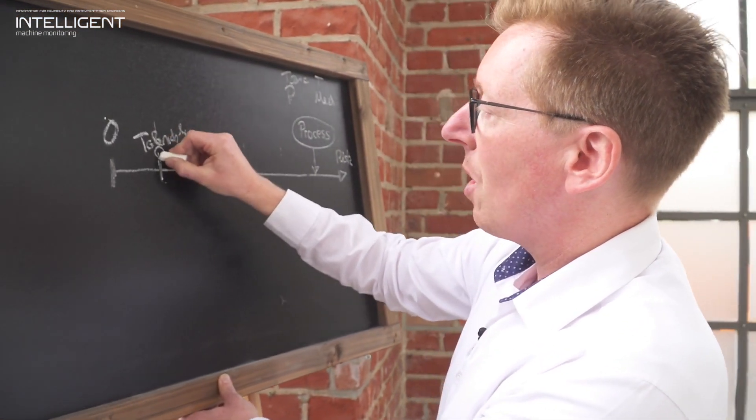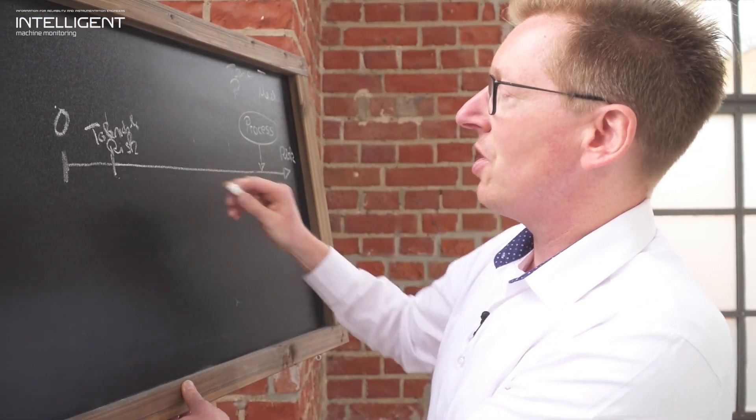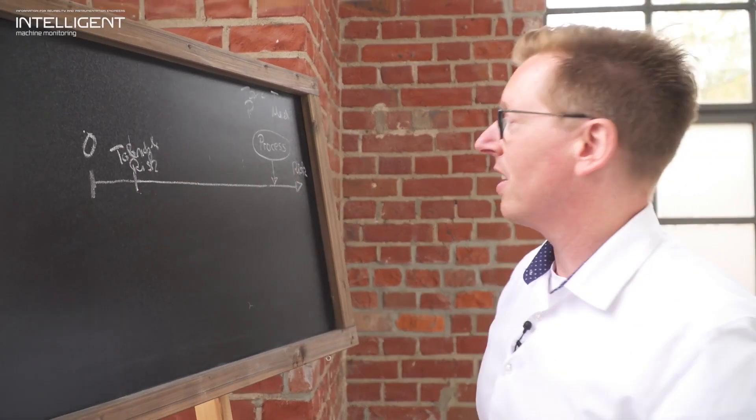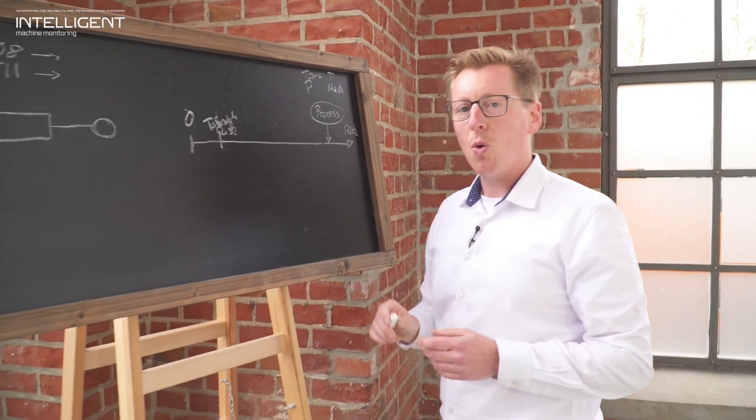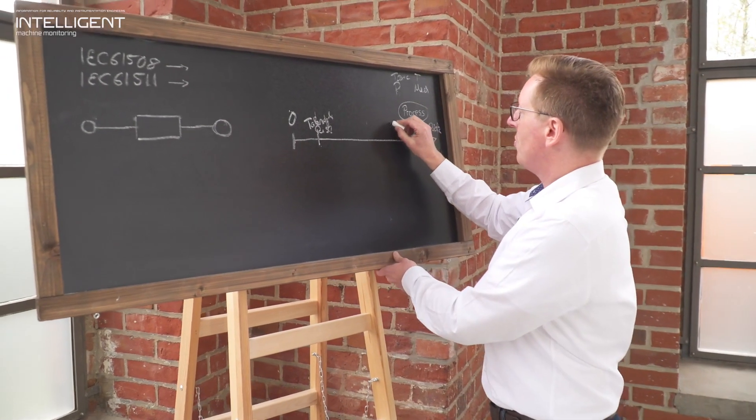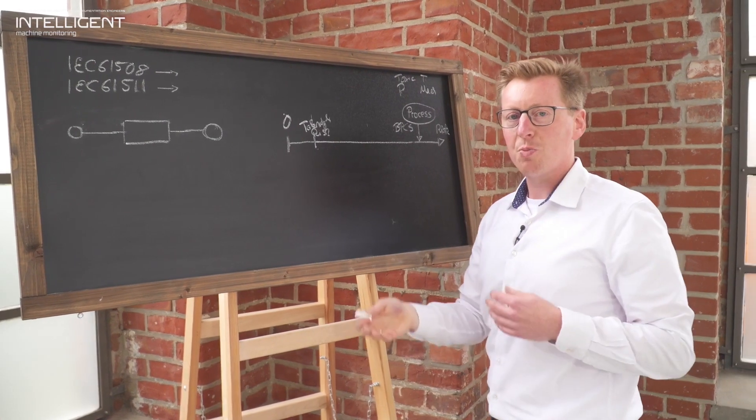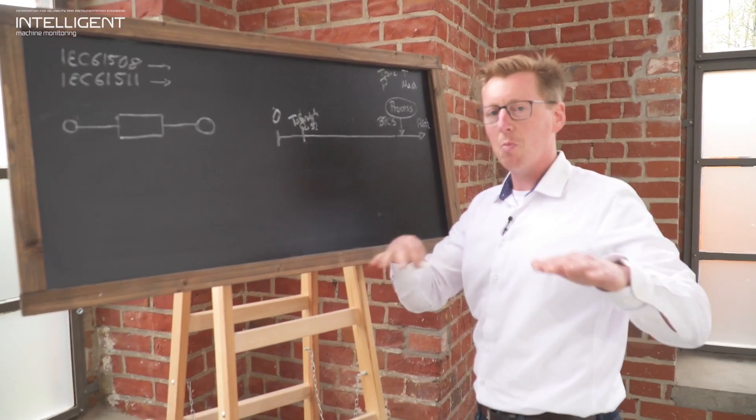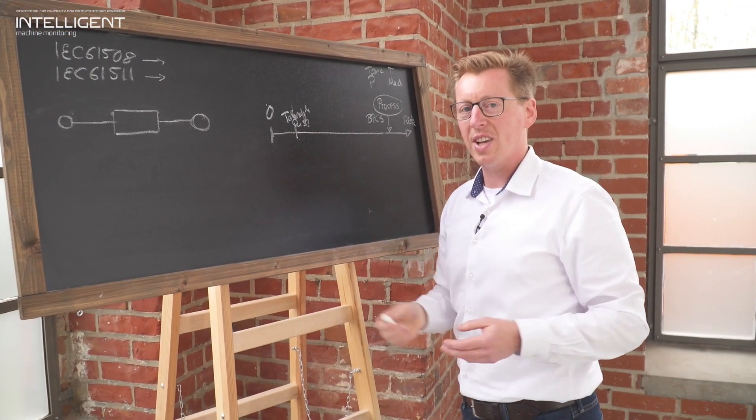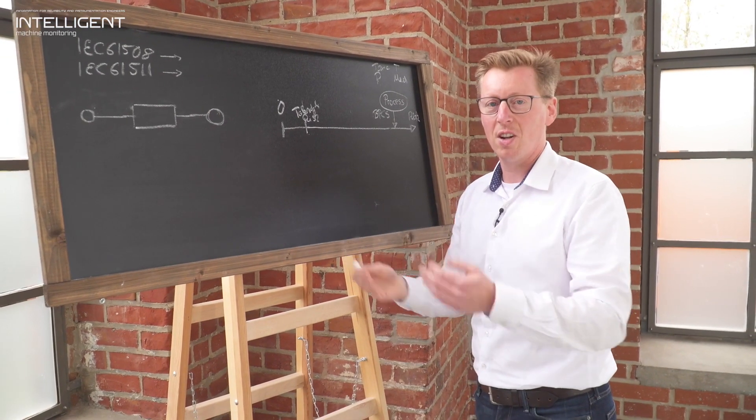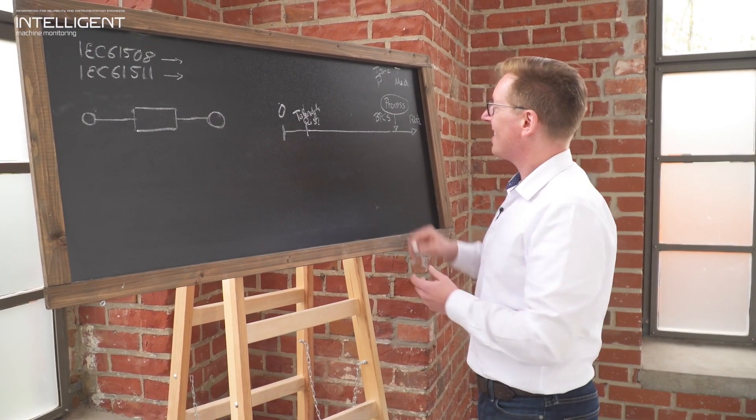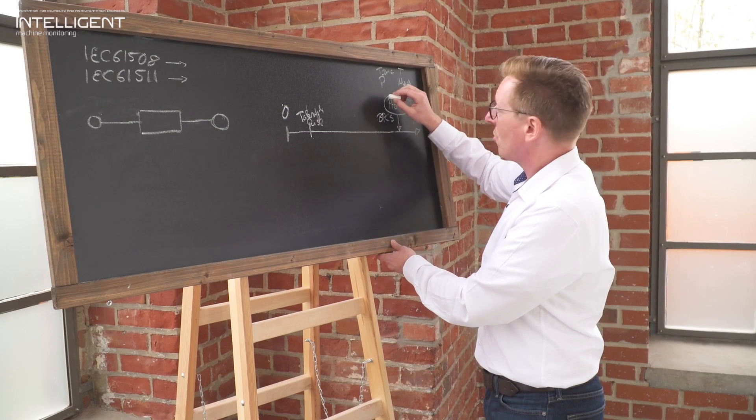You do this by implementing certain layers of protection. Every process has a BPCS, basic process control system. This controls flows, pressures, temperature to stay within the boundary conditions as per design limits, so you wouldn't burst the vessel. You run the machines in the design limits. This is the basic process control system.